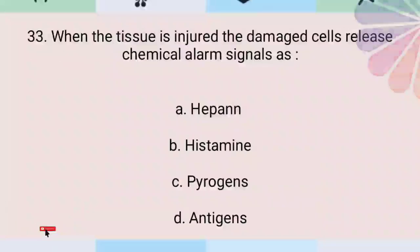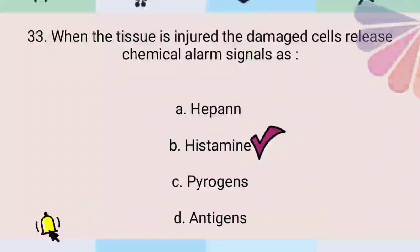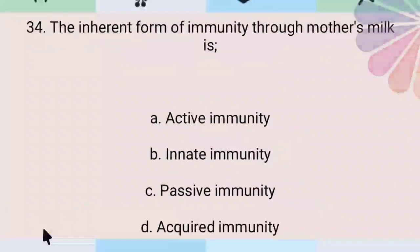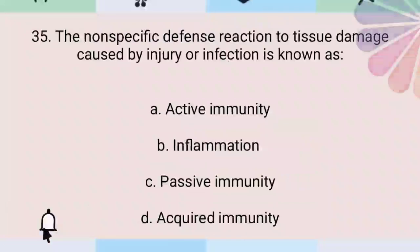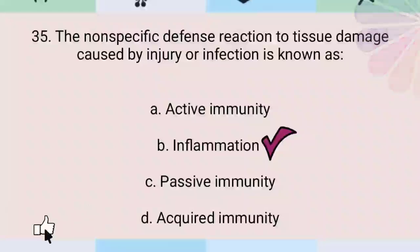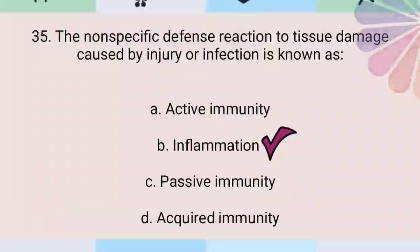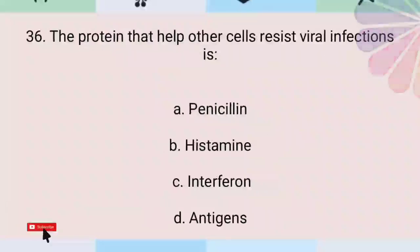When the tissue is injured, the damaged cells release chemical alarm signals such as histamine. The non-specific defense reaction to tissue damage caused by injury or infection is known as inflammation. The protein that helps other cells resist viral infections is interferon.